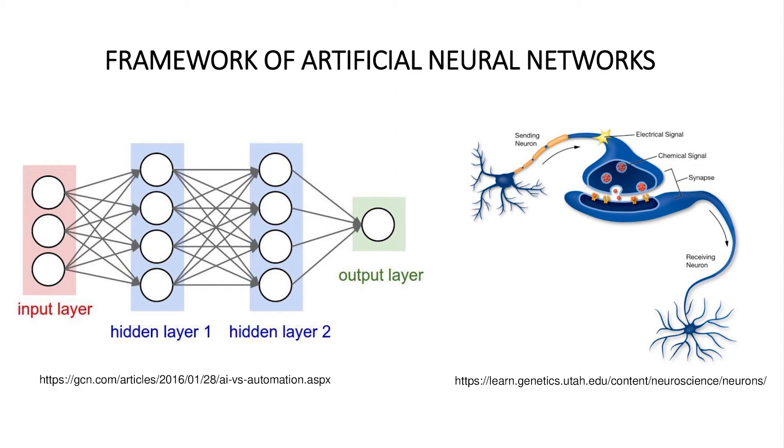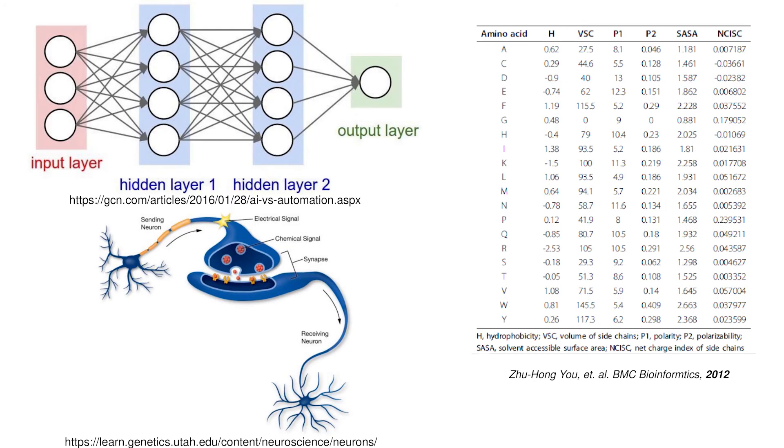Here we don't know what is there in the input layer and what is there in the output layer and what all information can be provided as input to the input layer. So in order to understand this, I will give you an example of a protein-protein interaction predictor. Here, what all information can be provided as input to the input layer: information regarding hydrophobicity, volume of side chains, polarity, polarizability, solvent accessible surface area, and then net charge index of side chains can be provided as input to the input layer. Output layer will ultimately determine whether a given pair of proteins will interact or not.